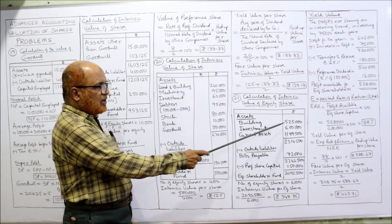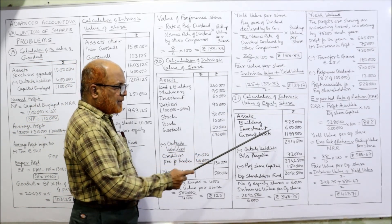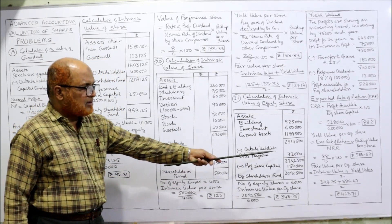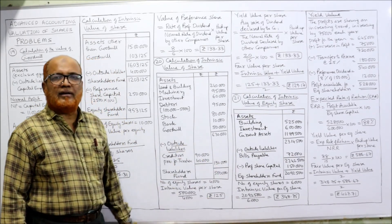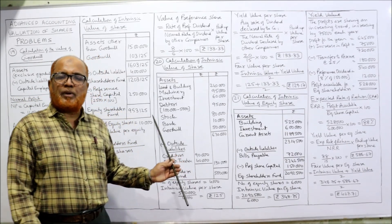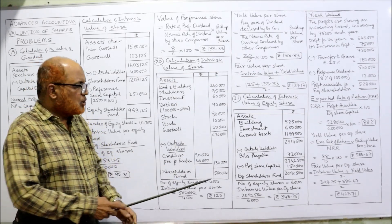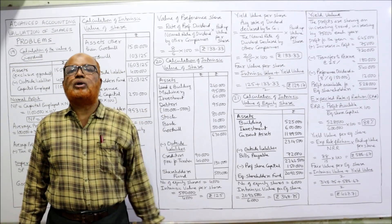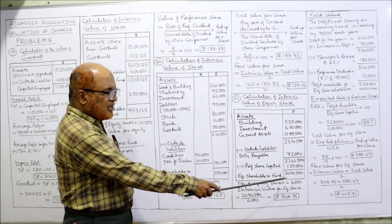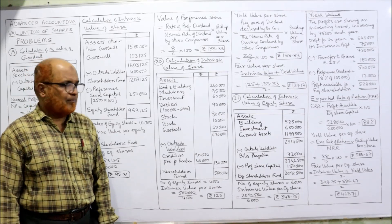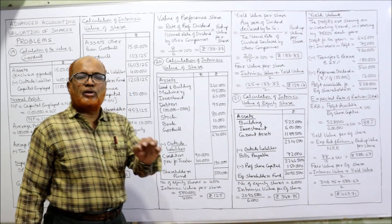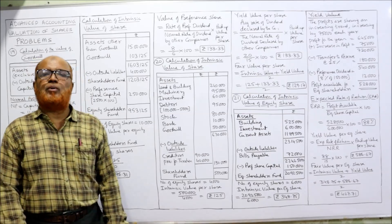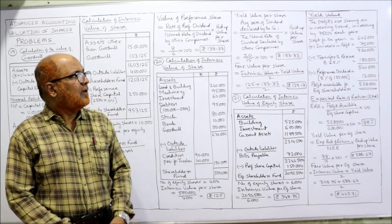Calculation of intrinsic value: building at present value ₹5,25,000, investment at present value ₹6,00,000, current assets at balance sheet value ₹11,89,500. Total assets = ₹23,14,500. Deduct outside liability ₹72,000 → net assets = ₹22,42,500. Deduct preference share capital ₹1,50,000 → equity shareholders' fund = ₹20,92,500. Number of equity shares = 6,000. Intrinsic value = ₹20,92,500 ÷ 6,000 = ₹348.75.